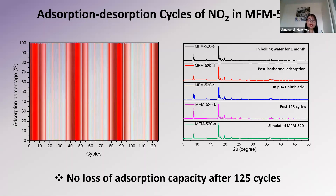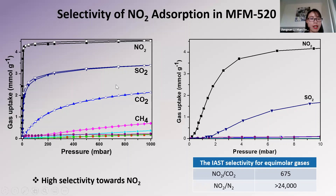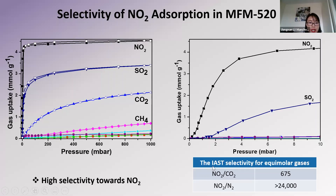To effectively remove NO2 from exhaust gas, we still need high selectivity towards NO2. I compared the uptake of other gases present in exhaust gas, and we found that this material shows preferential adsorption of NO2. This becomes particularly pronounced at low pressure and high temperature, where the uptake of all other gases is negligible while NO2 uptake remains very high. Calculated IAST selectivity also suggests that for different gas mixtures, it displays promising NO2 removal capacity.